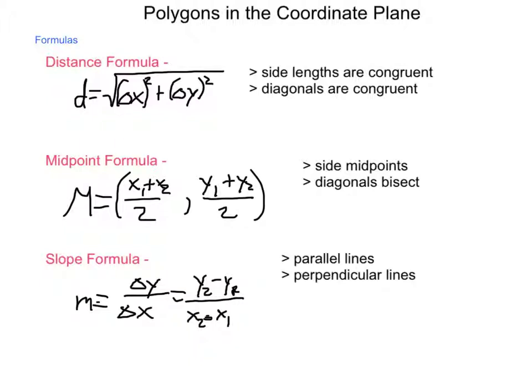Now, slope, we can use in the following ways. And that is to determine if lines are parallel, for instance in parallelograms, or if lines are perpendicular. That could be diagonals being perpendicular, or side lengths being perpendicular, because we would need that for rectangles or squares. So, with all these applications, how do we begin applying them? Let's take a look at this.